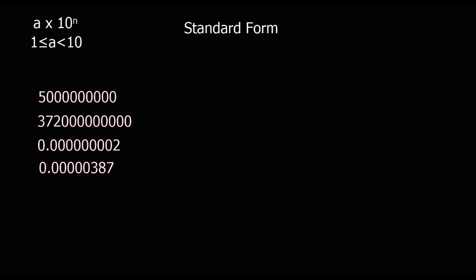Here are some numbers we're going to convert from ordinary numbers into standard form. First, the number between 1 and 10 is 5, times 10. How many times? 1 to get to 50, 2 to get to 500, 3 to get to 5,000 — continuing to 9 times. So this is 5 times 10 to the power of 9.